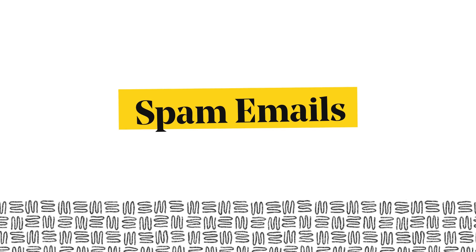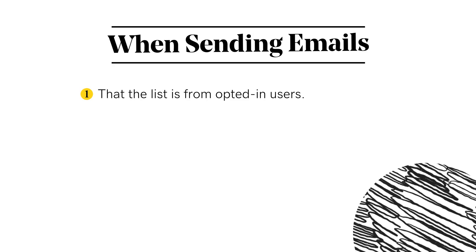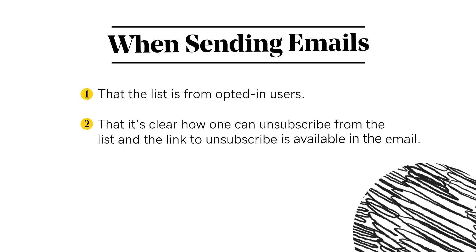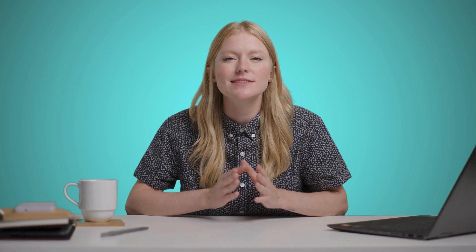There are four main areas you can focus on to create standards to aid user privacy and trust. One aspect of user privacy and trust that is very common is spam emails. When you send emails on behalf of your business, you want to check for a few things: that the list is from opted-in users, that it's clear how one can unsubscribe from the list and the link to unsubscribe is available in the email, and that the user is indeed being unsubscribed.